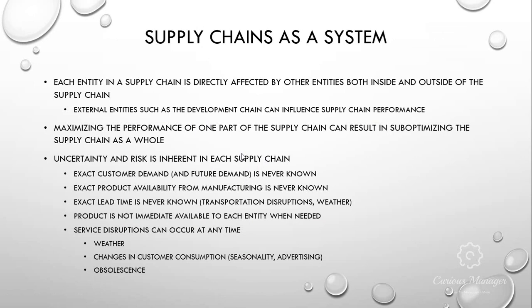Supply chains have characteristics that are very similar to systems in general. A system is two or more essential parts that interact together to achieve a common goal. Supply chains have essential parts: you need a supplier, manufacturing, and a customer with demand for a part. One element of any system is that the habits of one entity can have an indirect effect on the performance or ability of other parts to perform, and this is very true of a supply chain. Each entity is directly affected by other entities, both inside and outside the supply chain.